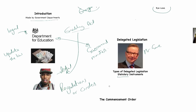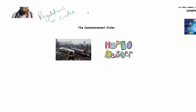I want to talk about one specific type of statutory instrument, and that's the commencement order. Statutory instruments are often made in terms of a commencement order. If you watch the series of videos I've done about legislation and being able to read legislation, I will talk about commencement orders in reference to the Railways Act, so have a look at that and see how those two things link in. A commencement order specifies when an act comes into force.